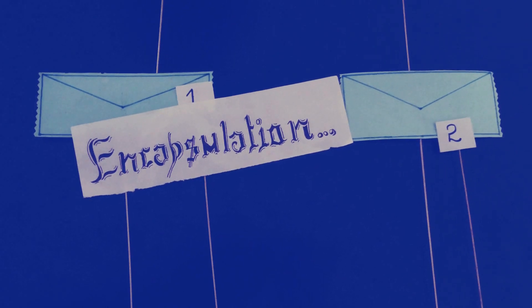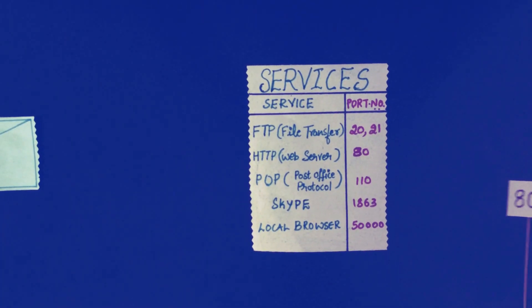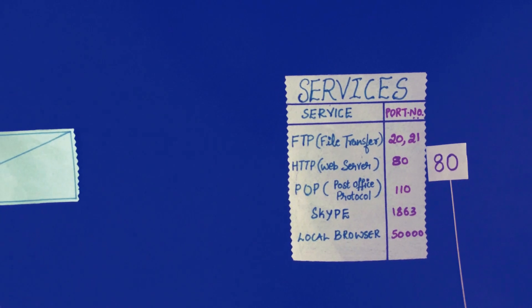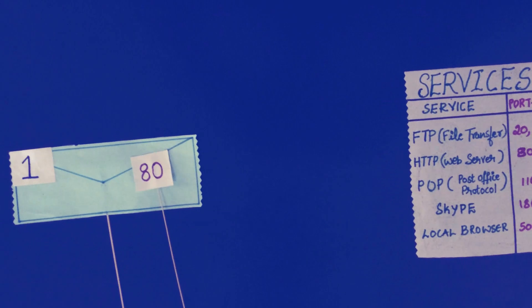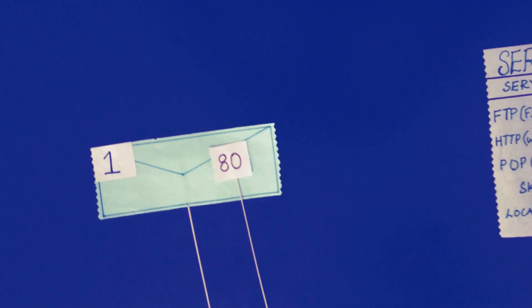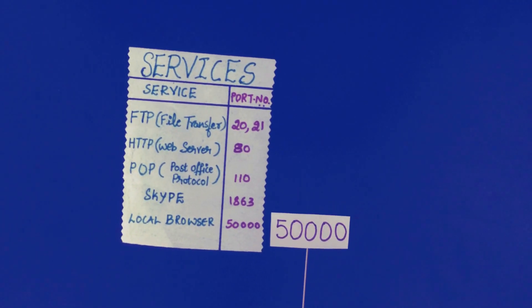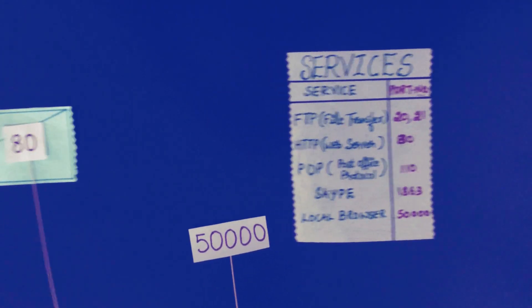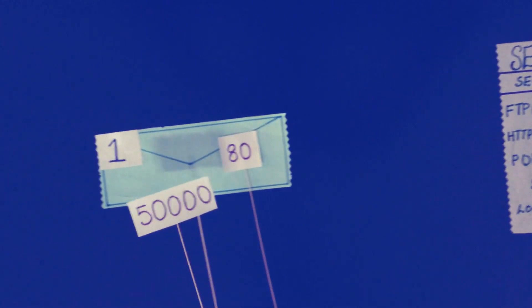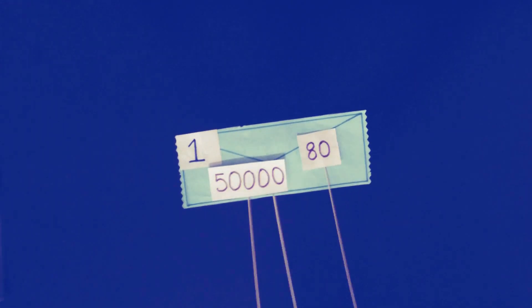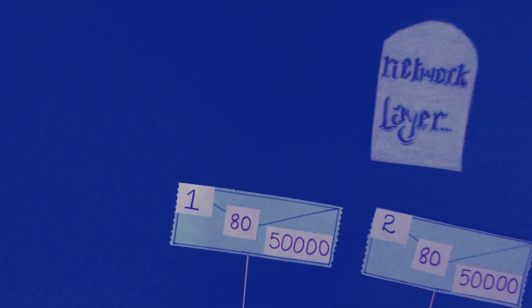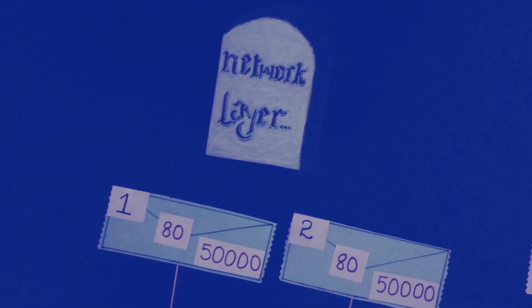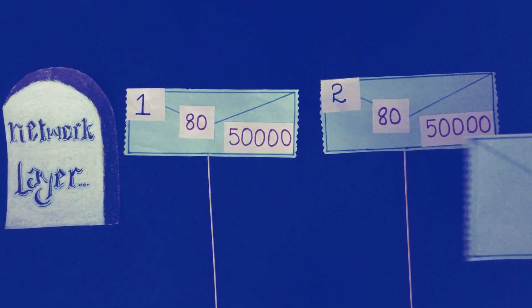This is called encapsulation. To pass data to the proper application, the transport layer must identify the target application's address. The transport layer assigns an identifier to each, called the port number. Segments are then sent to the network layer, where encapsulation takes place.